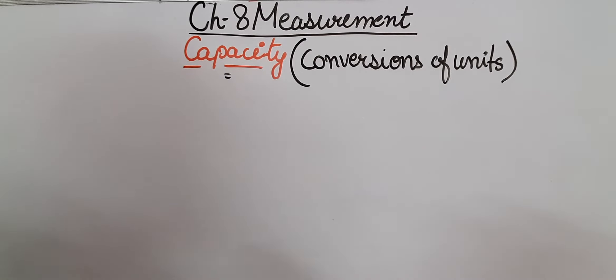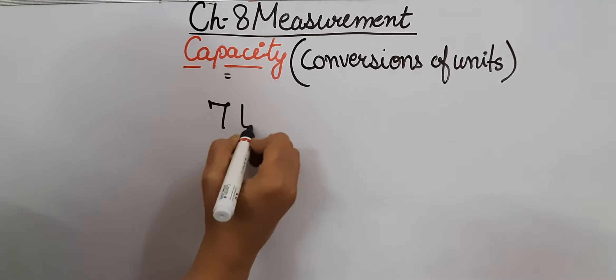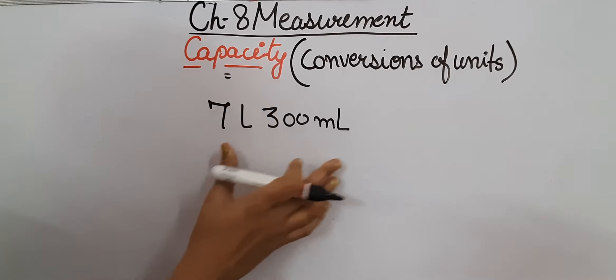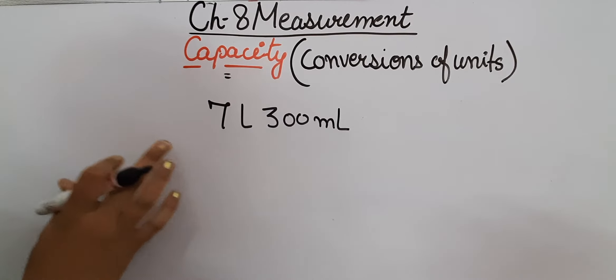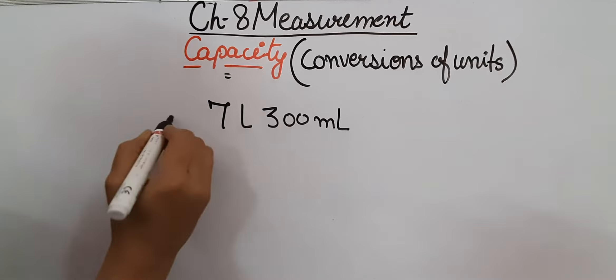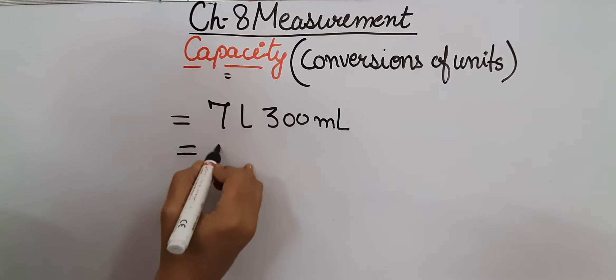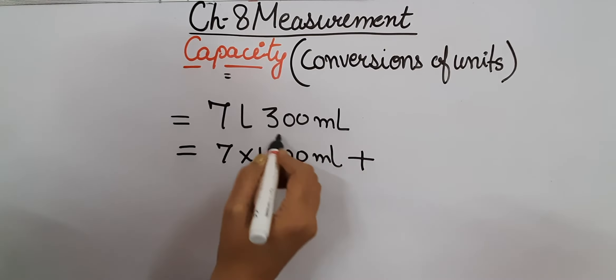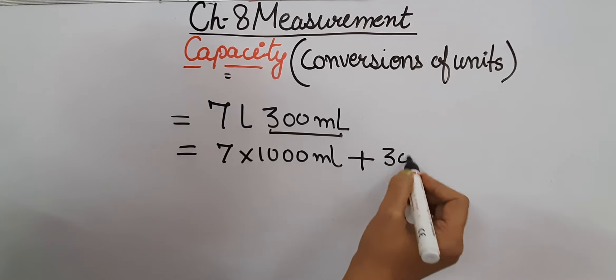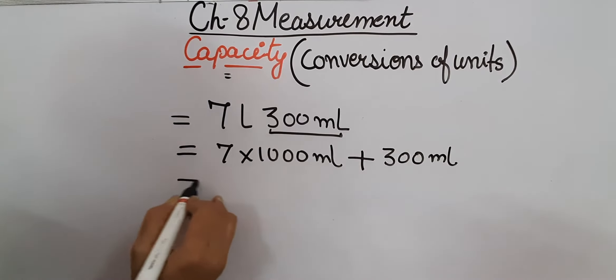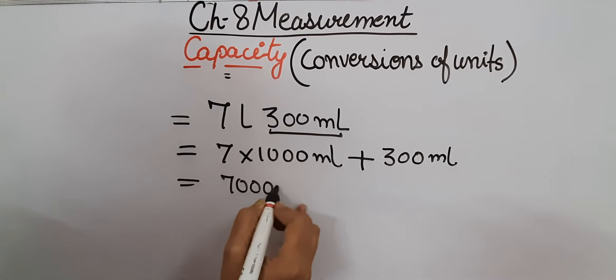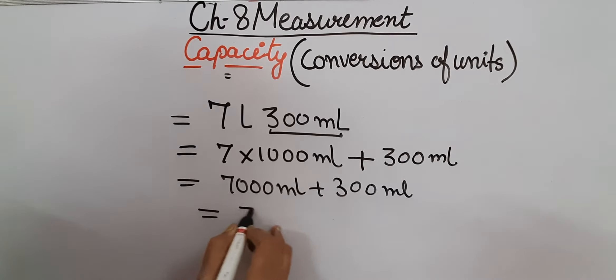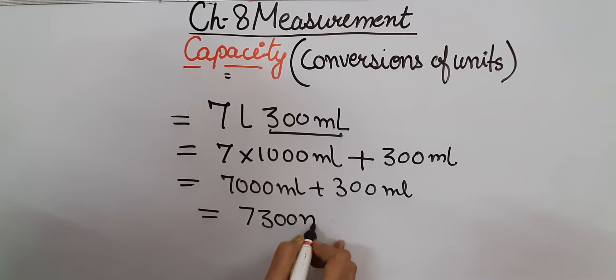Similarly, if it is 7 liters and 300 milliliters, when we have to convert this unit into milliliters, we will multiply this 7 by 1000 milliliters and we will add this 300 milliliters into it. So our answer will be 7000 milliliters plus 300 milliliters equals 7300 milliliters.